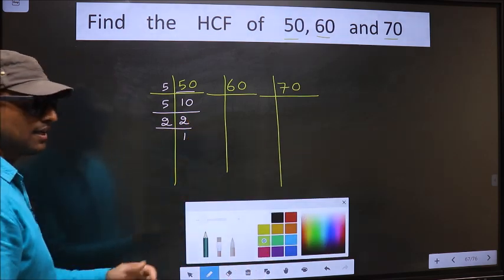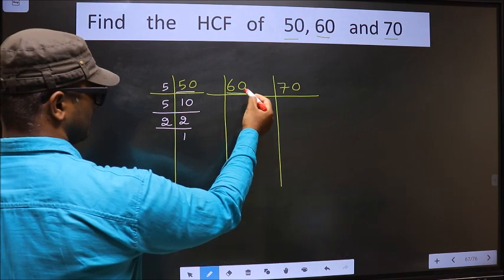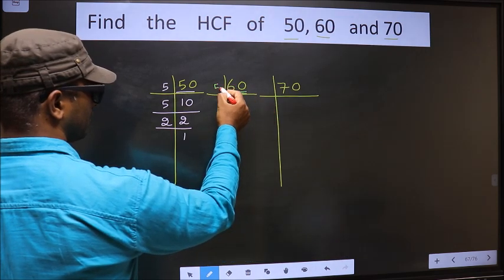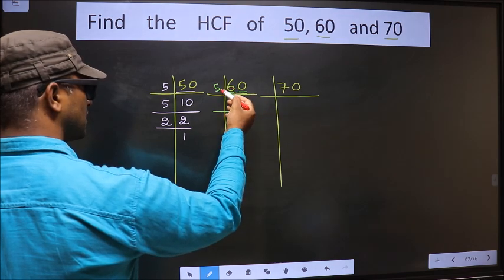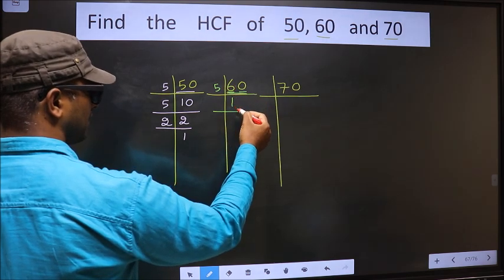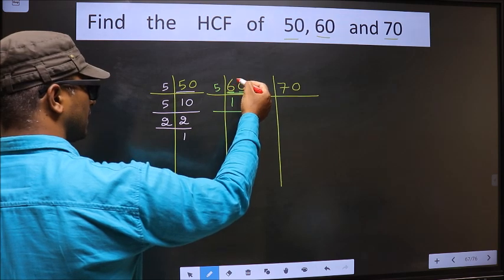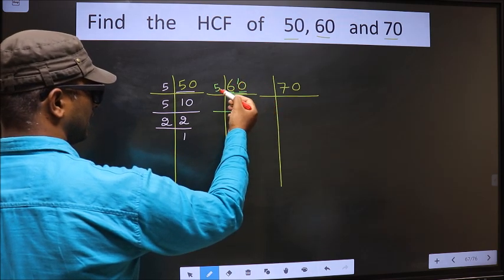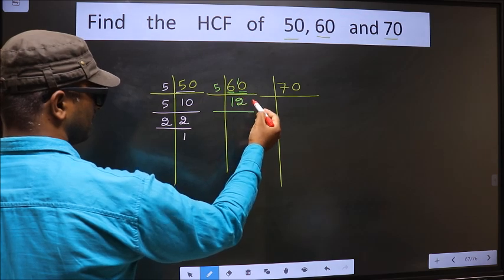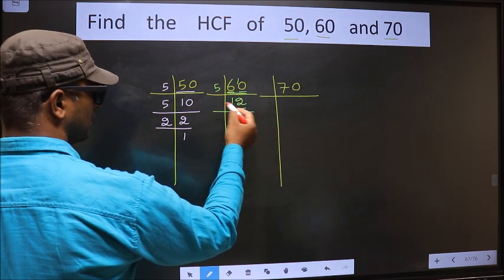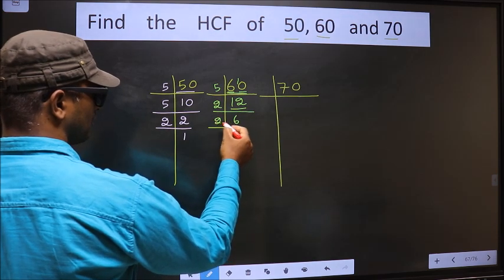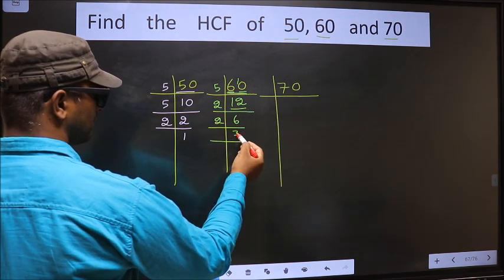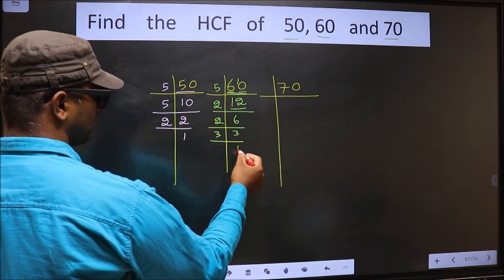Now the other number 60. Last digit is 0 so we take 5 here. The first number 6, a number close to 6 in 5 table is 5 times 1 is 5. 6 minus 5 is 1, carried forward making it 10. When do we get 10 in 5 table? 5 times 2 is 10. Now here we have 12, 12 is 2 times 6. 6 is 2 times 3. Now we have 3, 3 is a prime number so 3 times 1 is 3.